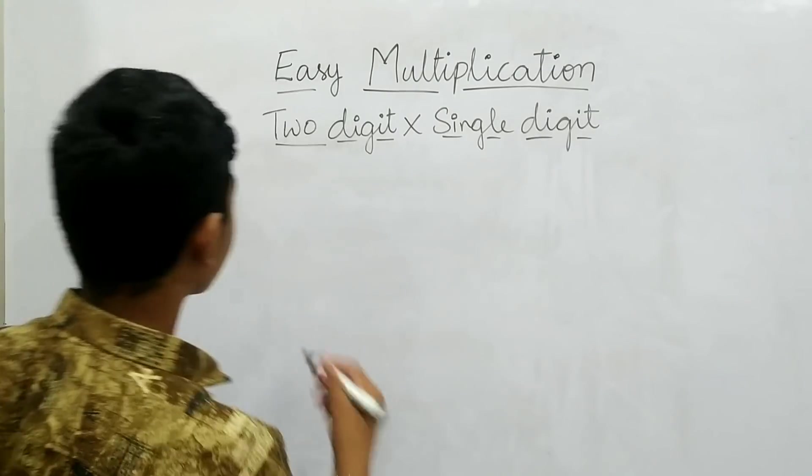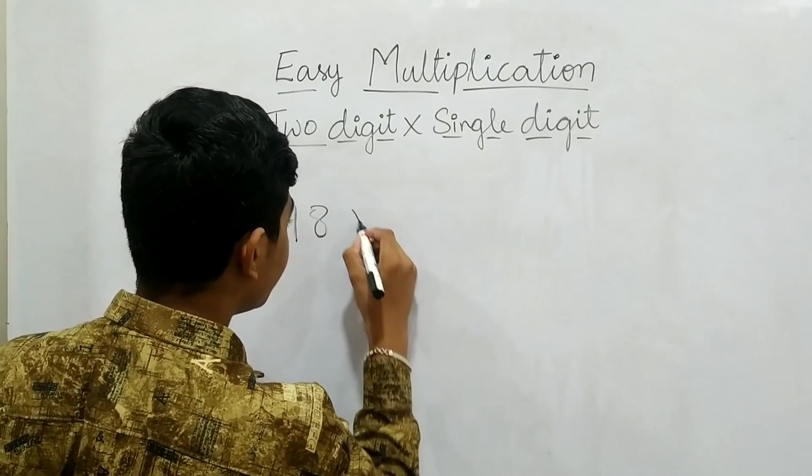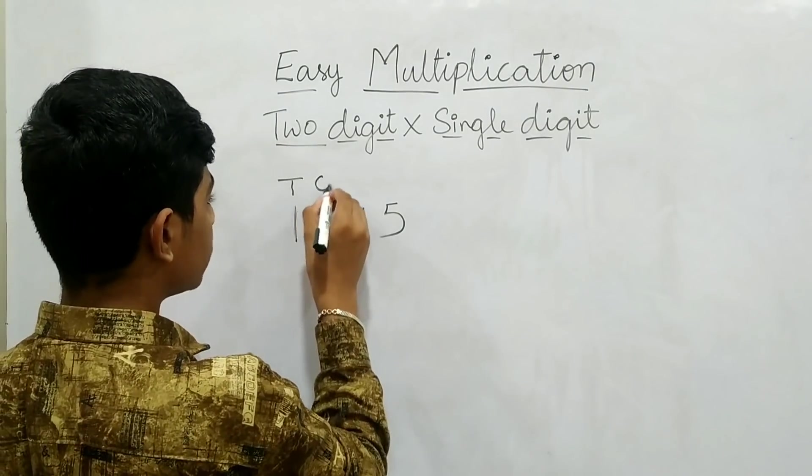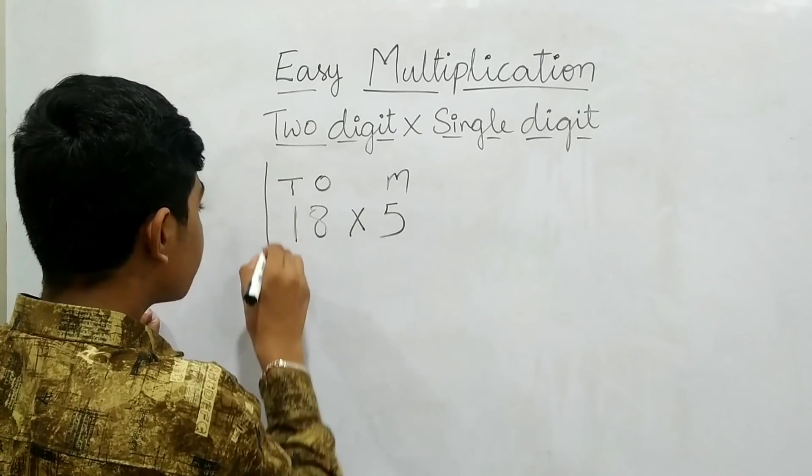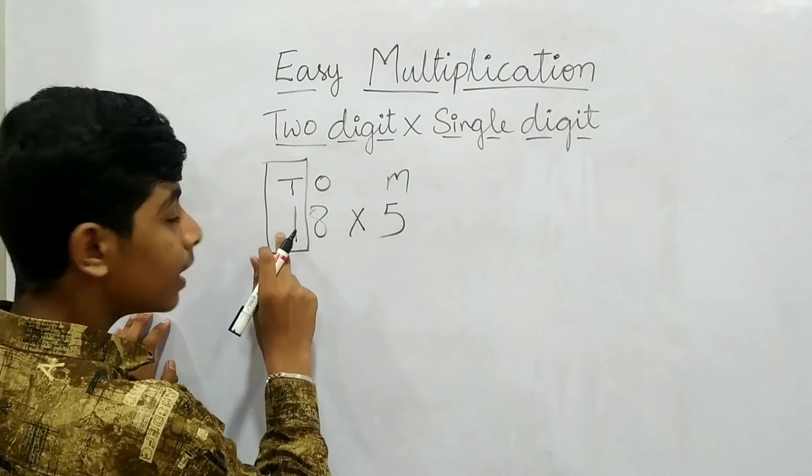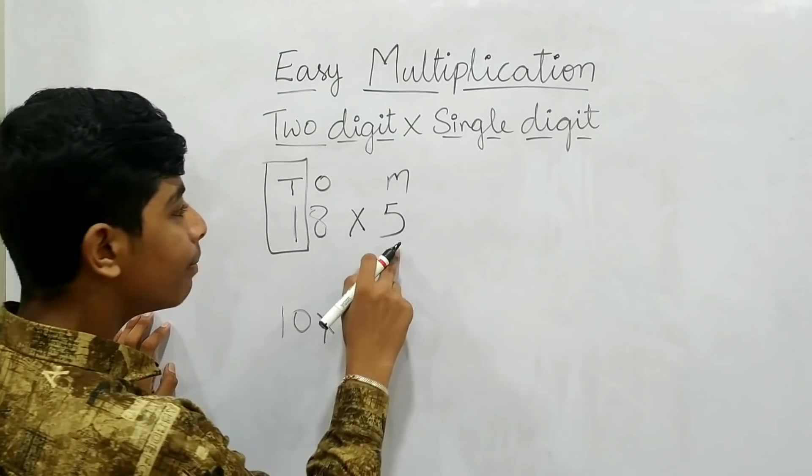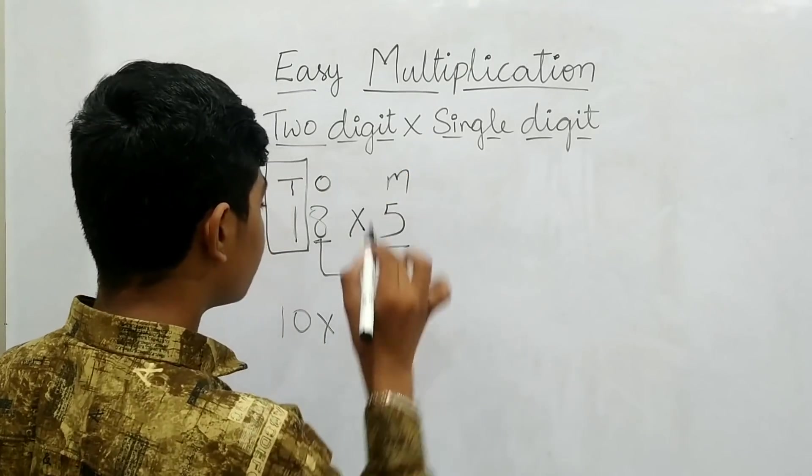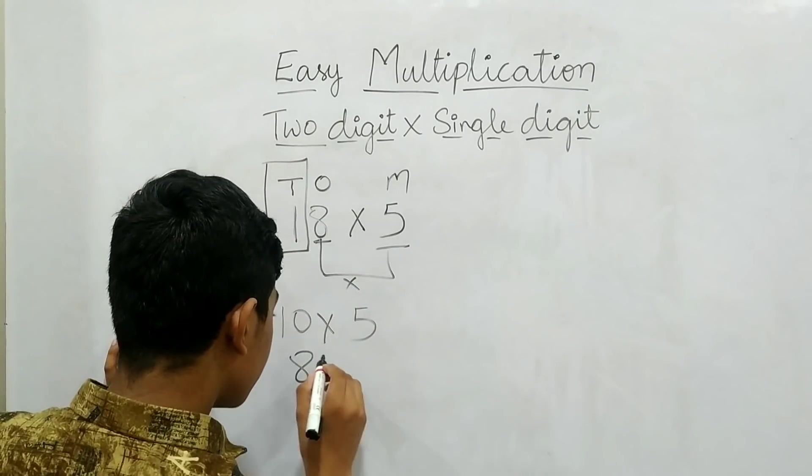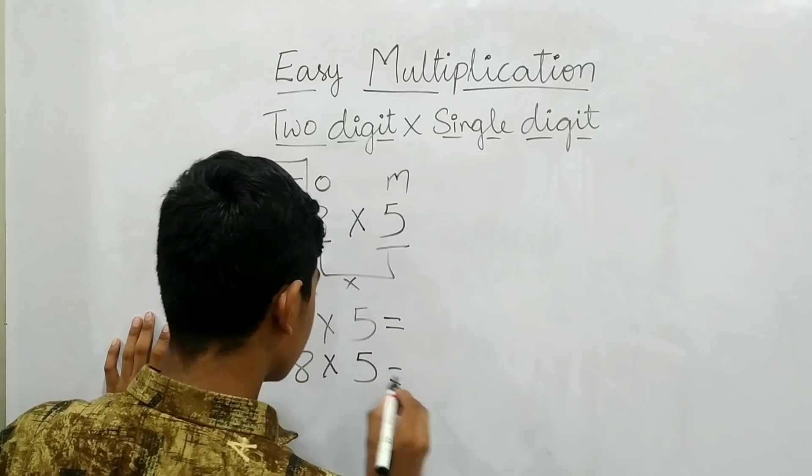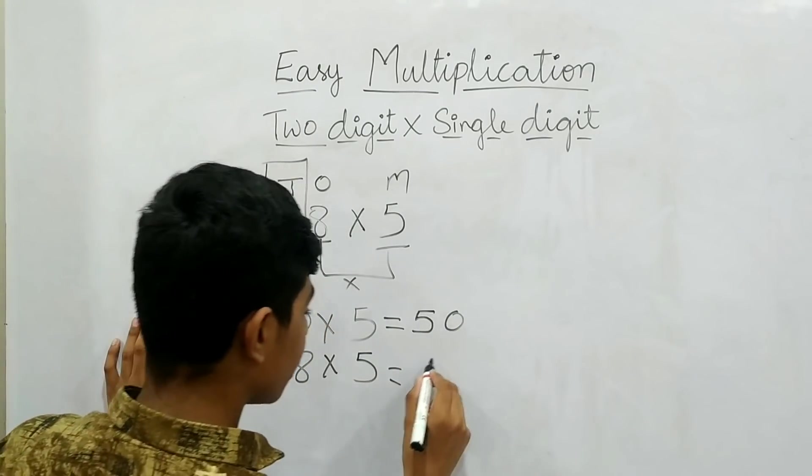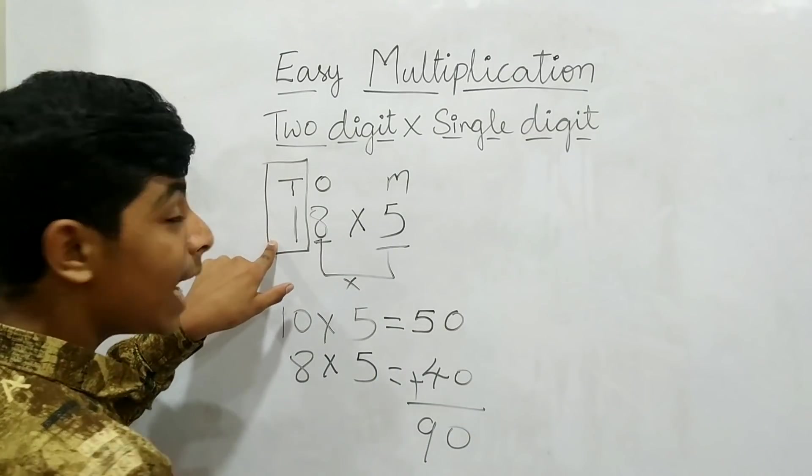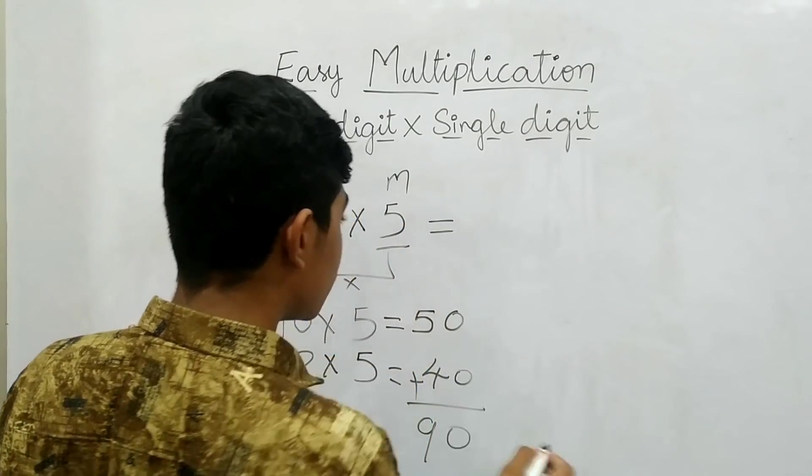Now, let's go to another sum. Now, 18 into 5. For this also, we should use the same technique. 10's, 1's, multiplier. Now, in 10th place, we have 1. Therefore, we should write 10. 10 into multiplier, 5. Now, in 1st place, we have 8. Multiplier is 5. We should multiply these both. Therefore, 8 into 5. That gives 10×5 is 50. 8×5 is 40. If we add these both, we will get the final answer as 90. Therefore, 18 into 5 equals to 90.